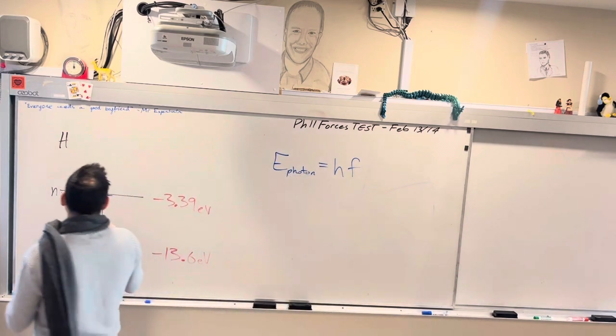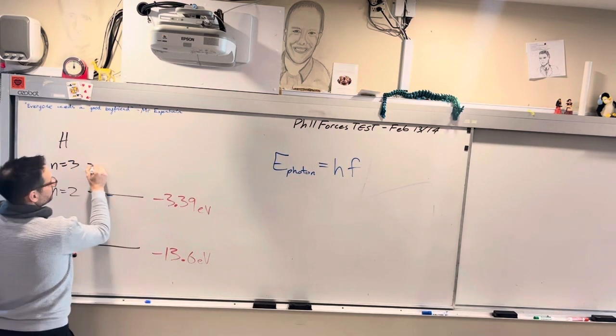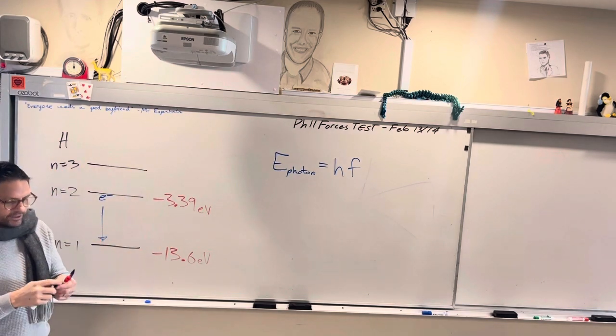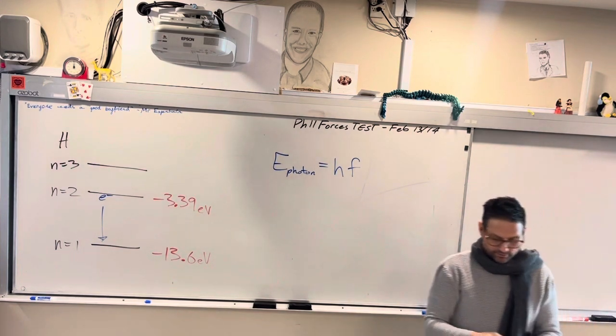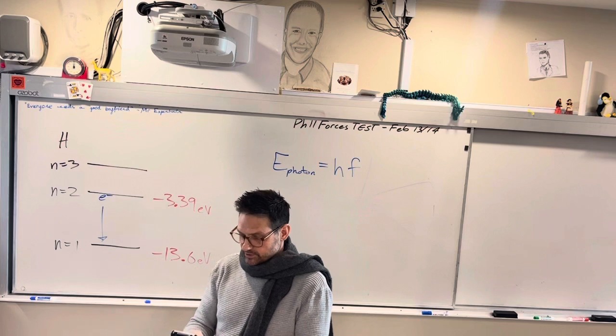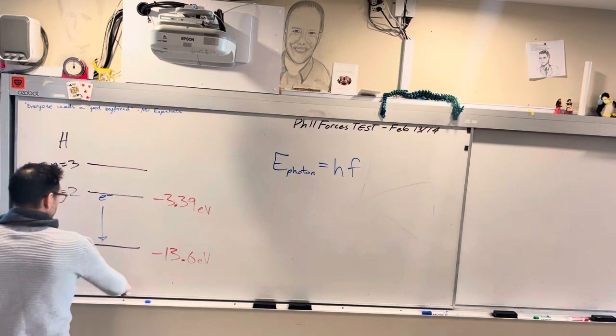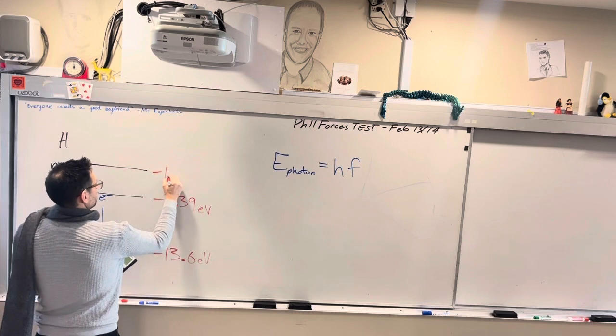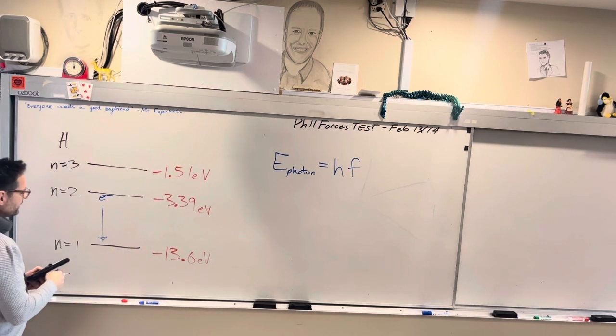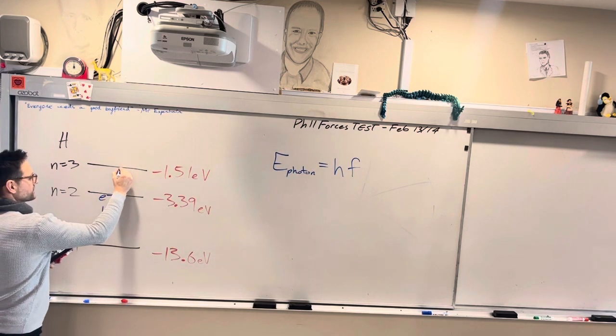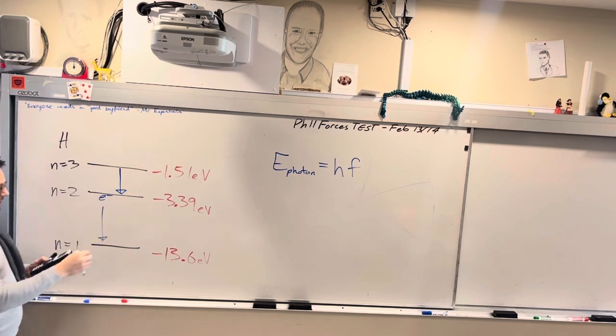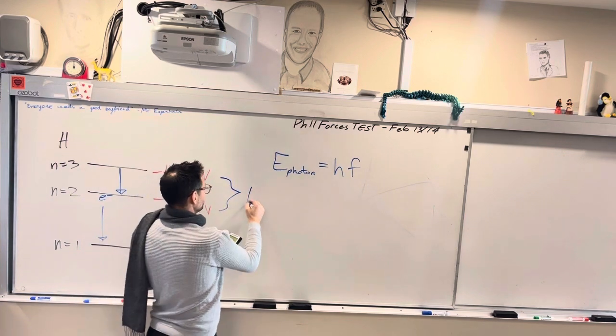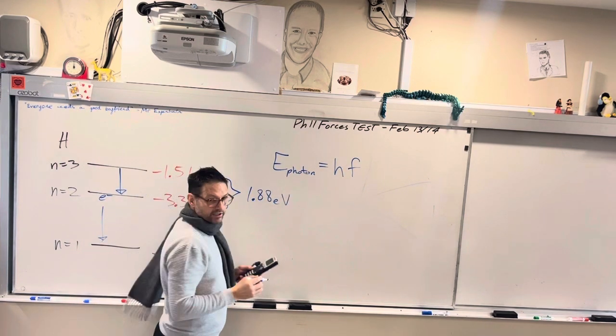But if you go from N equals 3, if you calculate this one can someone do that quickly for me? I'll do it too. You just go 13.6 divided by 3 squared which is 9 so you're going to get about 1.51. Calculate for me this energy here. So that's going to be 3.39 minus 1.51 so this drop is equal to 1.88 EVs.